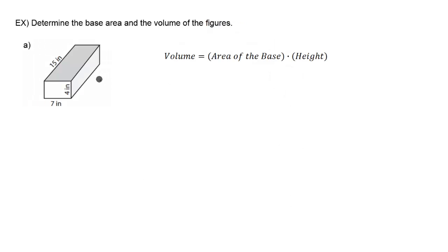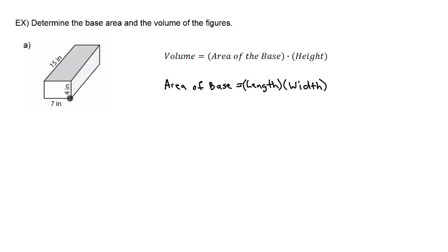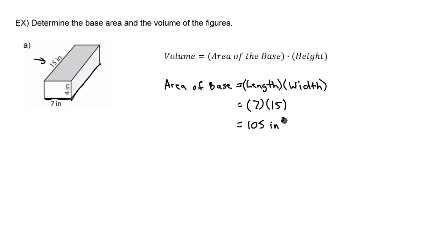In part A, we're given a rectangular prism, so the base is going to be a rectangle. The formula for area of a rectangle is simply length times width. Looking at the figure, the length across the front is seven inches, and the width — the depth of this prism — is 15 inches. So seven times 15 gives us 105 inches squared.